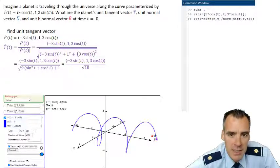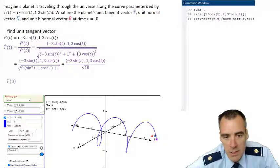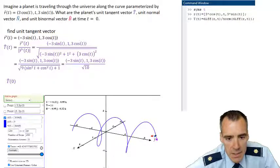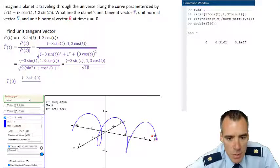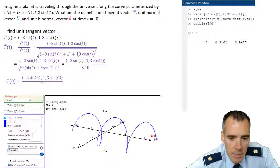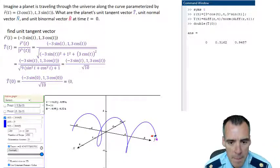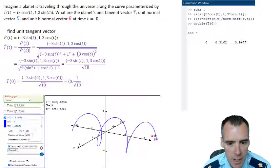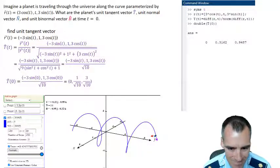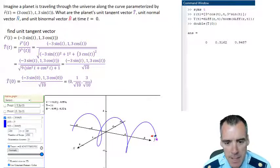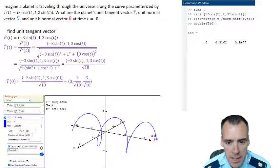If we want to find our tangent vector at the time T equals 0, we just plug 0 in for that. We get negative 3 sine of 0, 1, and 3 cosine of 0 as our x, y, and z components, all divided by square root of 10. Sine of 0 is 0, so our x component becomes 0. We get 1 over square root of 10 for our y component and our z component becomes 3 over square root of 10 since cosine of 0 is 1. In decimal form, that's the vector 0, 0.32, and 0.95.